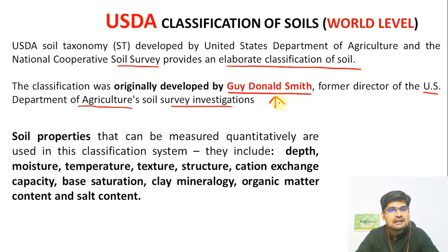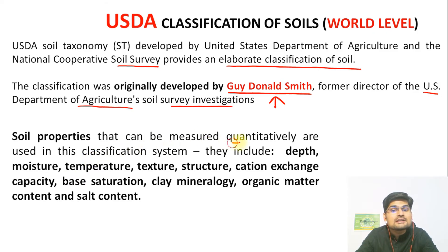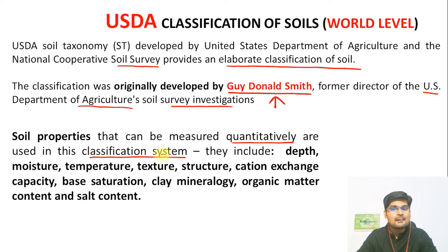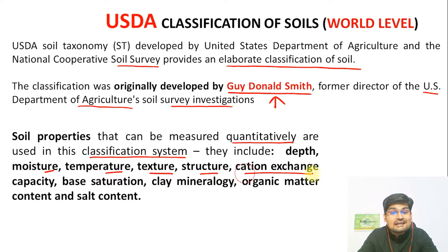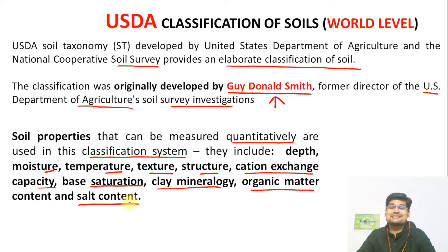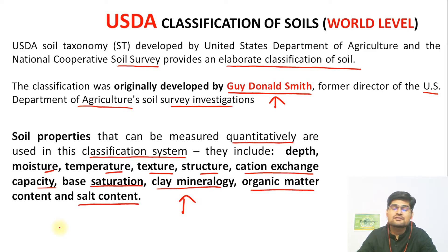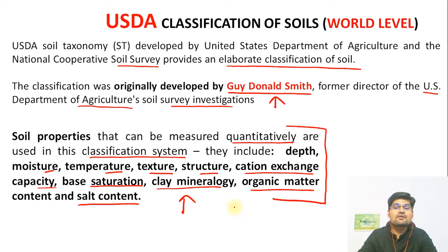It is important to first understand the basic criteria behind the classification of soil. Soil properties that can be measured quantitatively using statistical techniques are used in this classification system by USDA. These include factors like depth, moisture, temperature, texture, structure, cation exchange capacity, base saturation, clay mineralogy, organic matter content, and salt content in the soil. These are all physical properties used for soil classification by the United States Department of Agriculture.